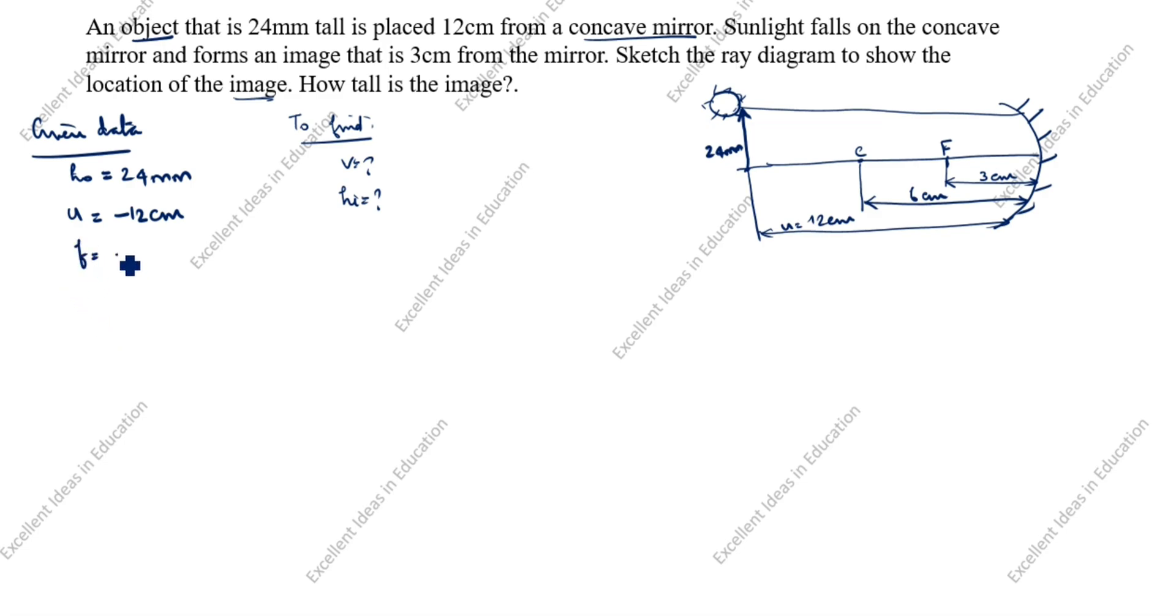F is minus 3 cm. This side is always negative. So we will take minus for focal length.